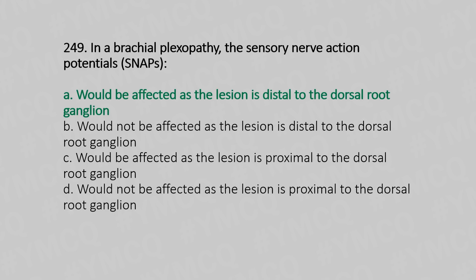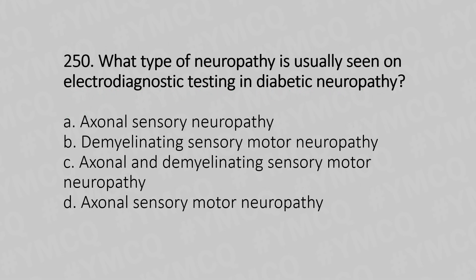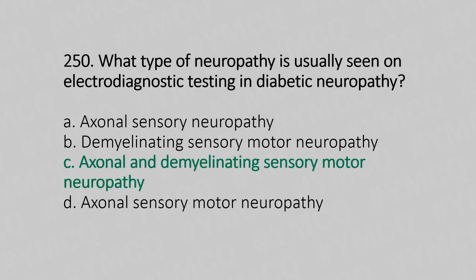Question 250: What type of neuropathy is usually seen on electrodiagnostic testing in diabetic neuropathy? Option A: axonal sensory neuropathy. Option B: demyelinating sensory motor neuropathy. Option C: axonal and demyelinating sensory motor neuropathy. Option D: axonal sensory motor neuropathy. The answer is Option C, axonal and demyelinating sensory motor neuropathy.